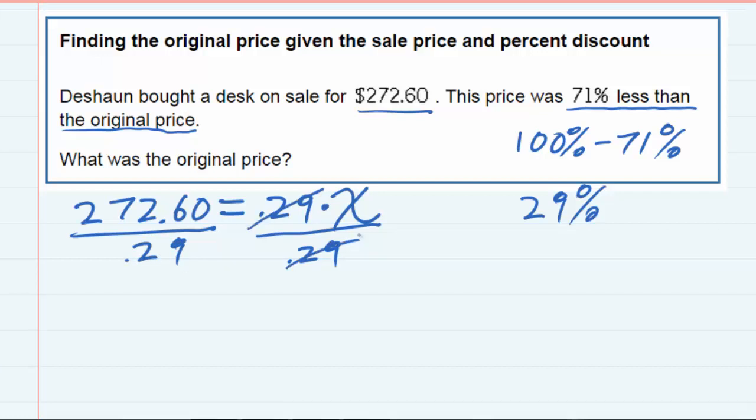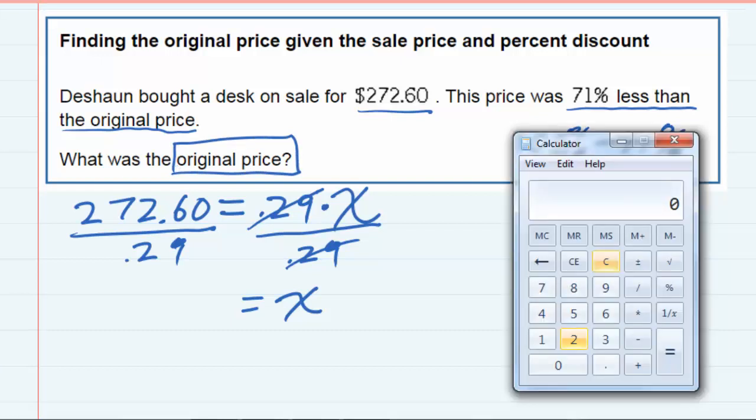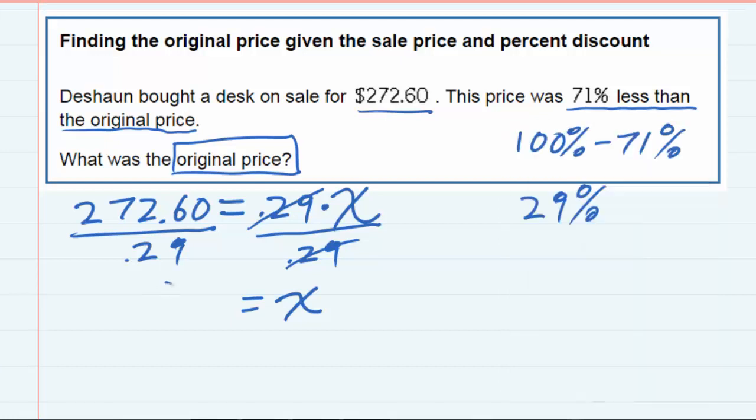And then the 0.29 and the 0.29 will cancel. On the right-hand side I now just have X by itself and we said that the X is the original price. So doing the calculation we have 272.60 divided by 0.29 equals 940. So $940.